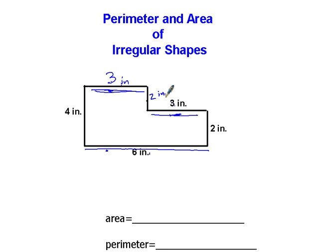perimeter is adding all the sides together. I can add these up, 4 plus 6 plus 2 plus 3 plus 2 plus 3, add those together, and I'm going to get 20 inches.